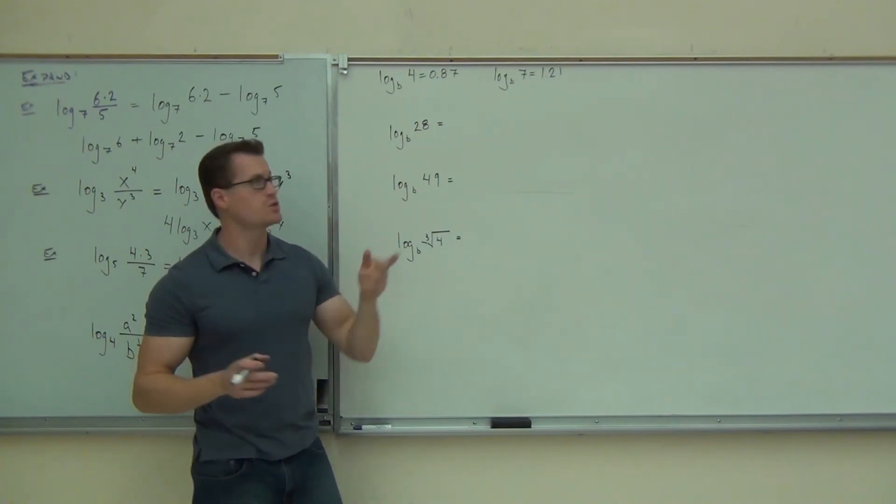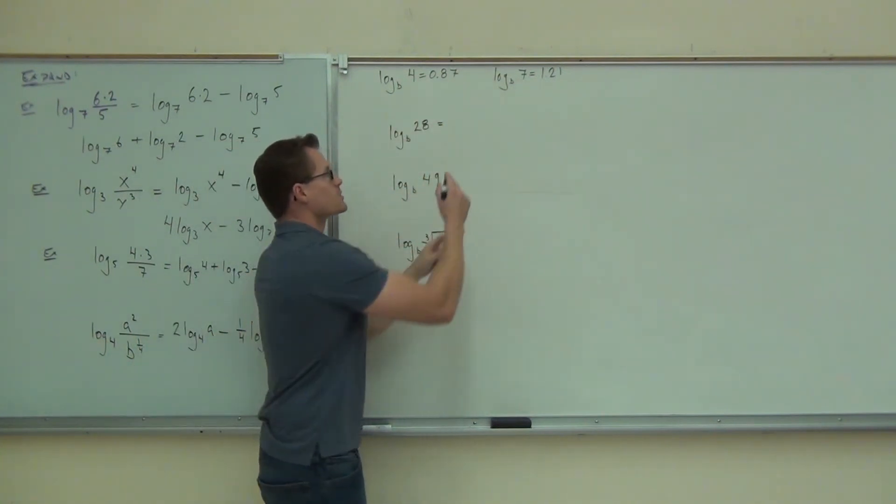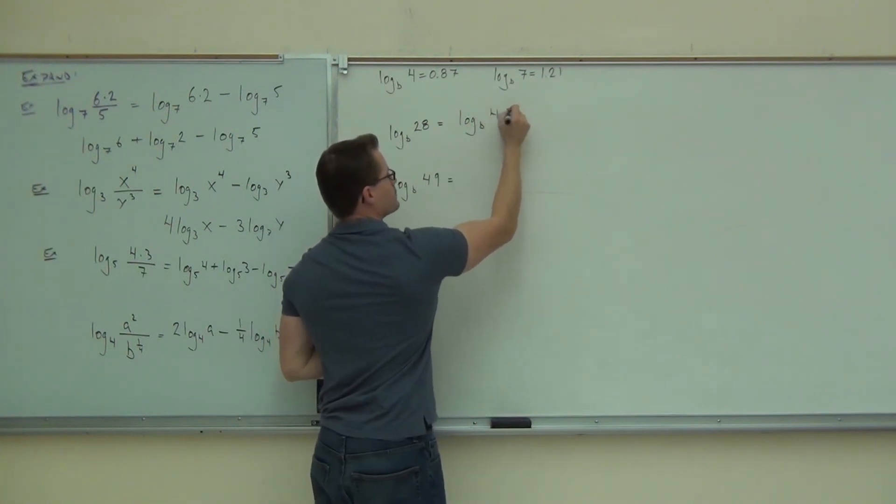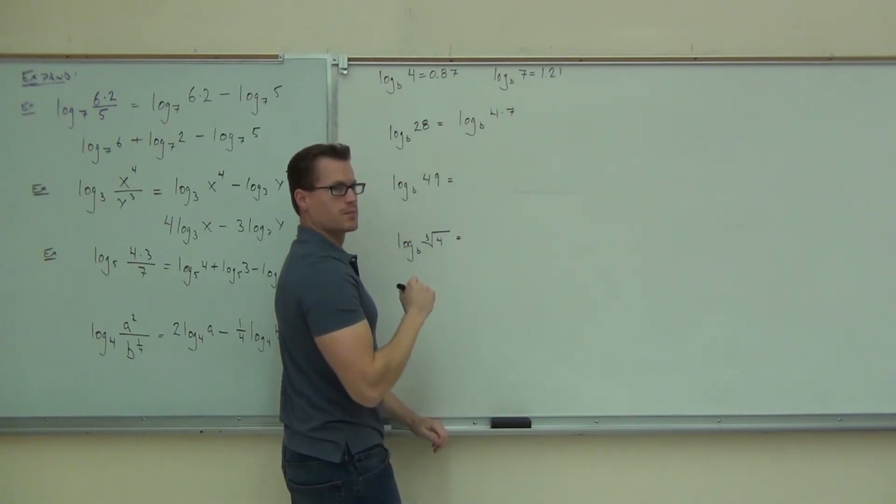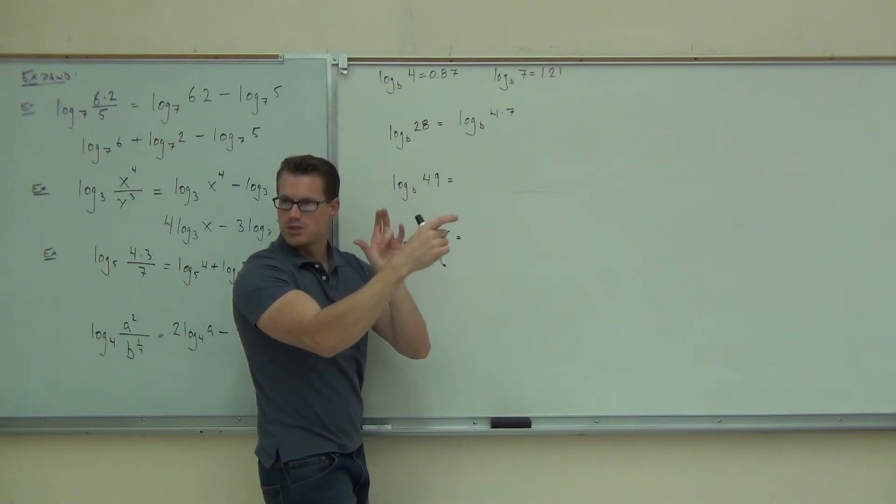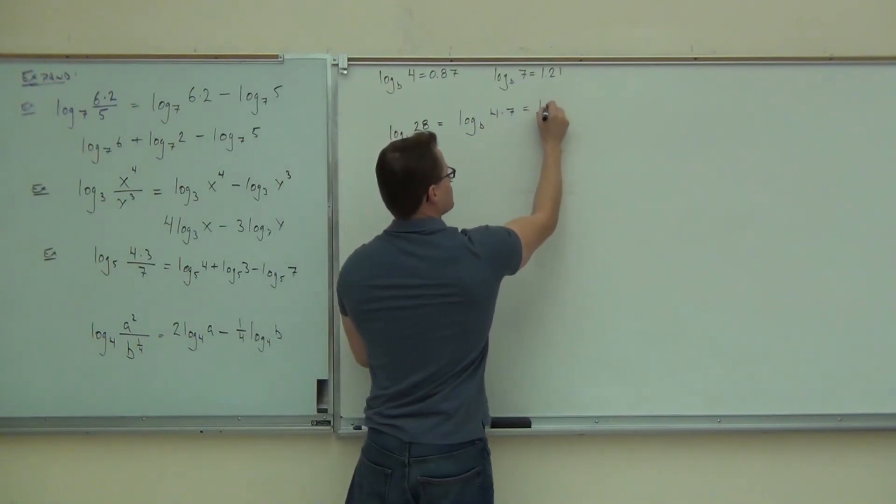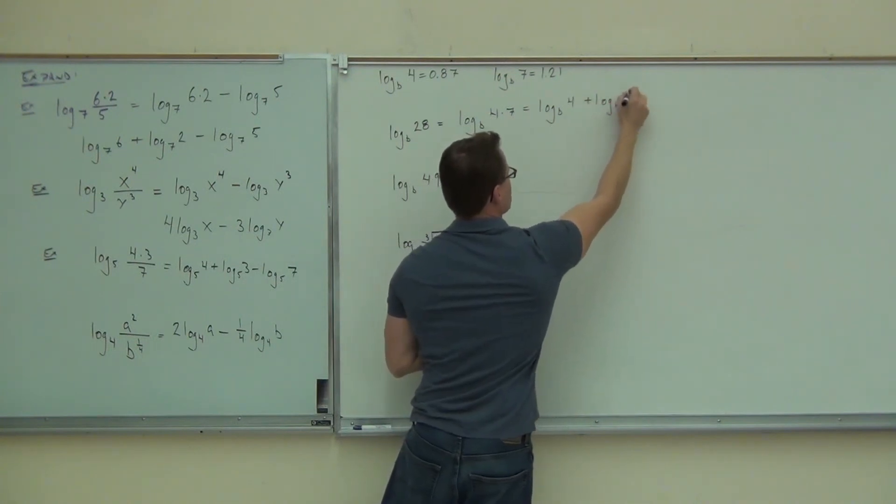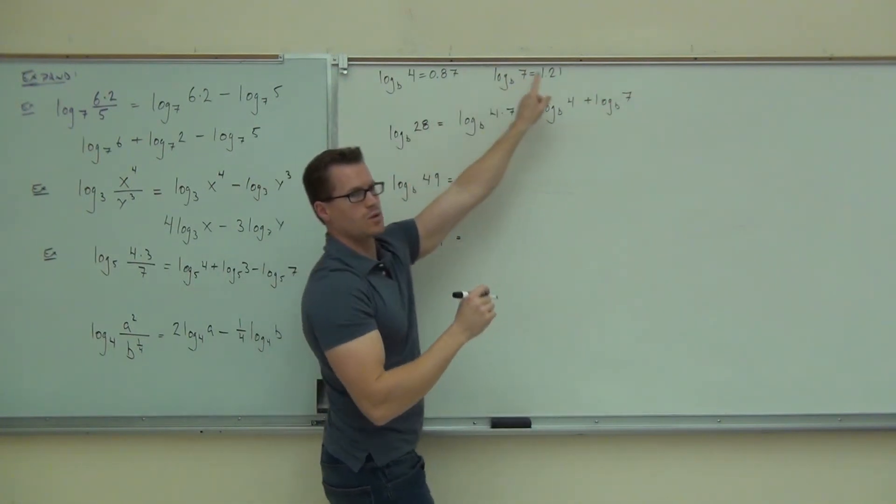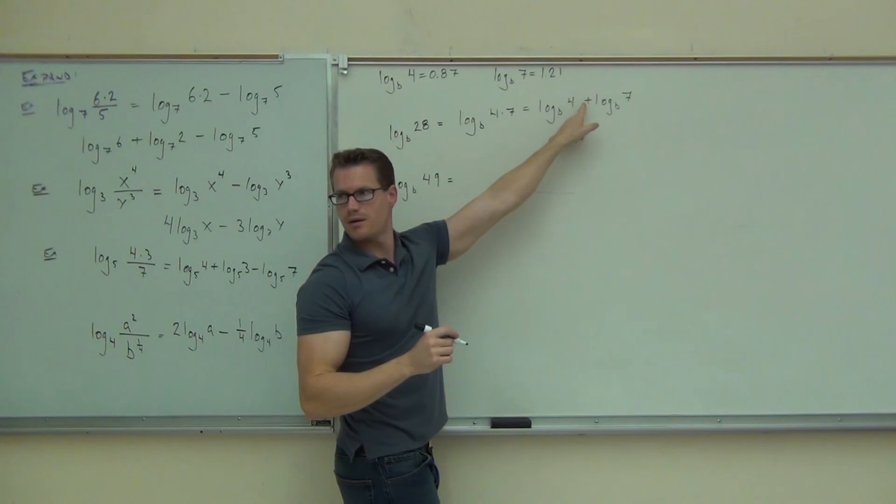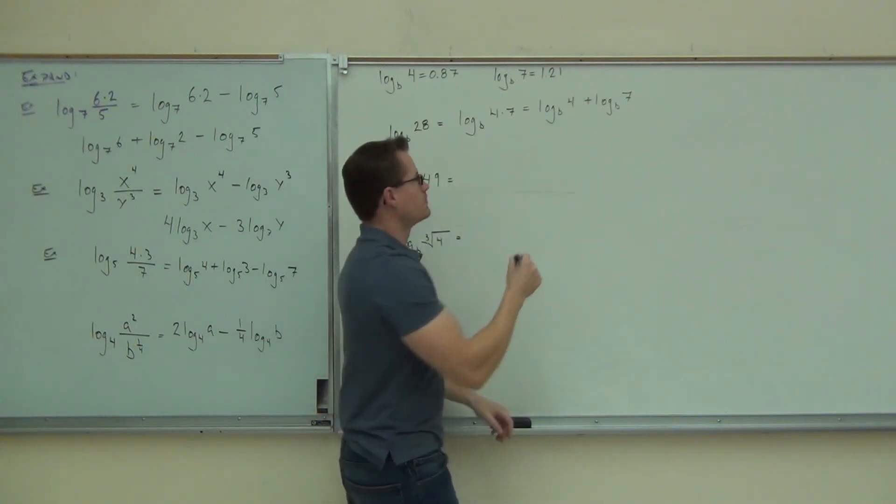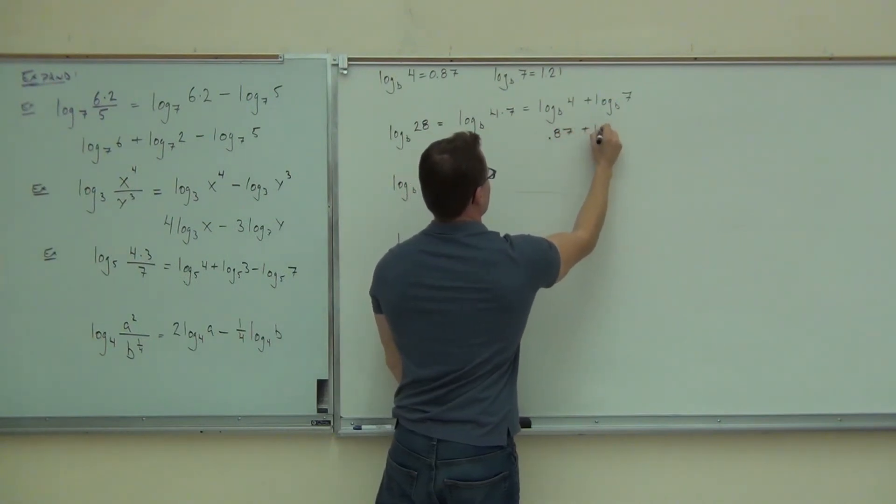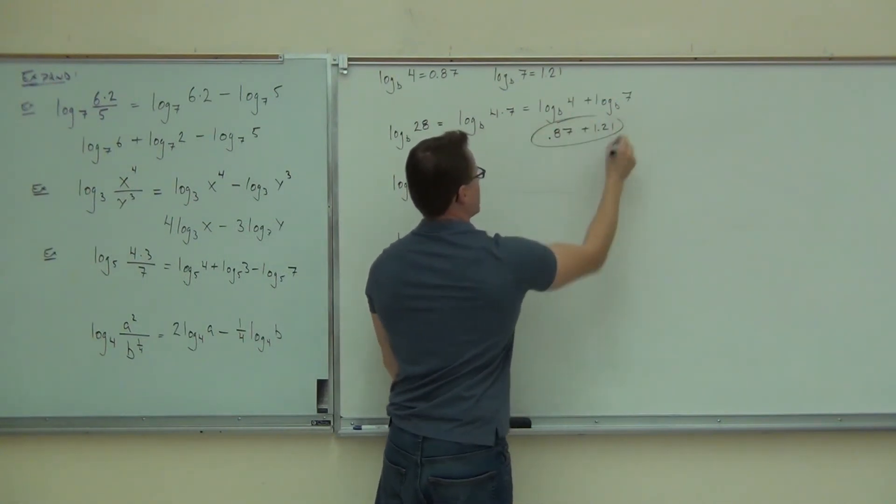So this would be log base B of 4 times 7. True. That's 28. You can split up that multiplication now. This is log base B of 4 plus log base B of 7. And then you can substitute those numbers in. Are you with me on that? Yes or no? And then add those.